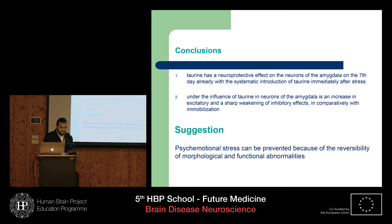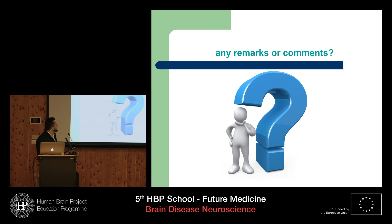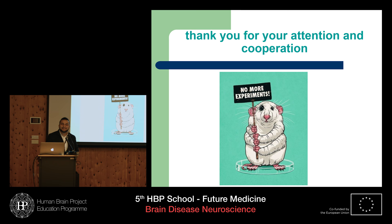Finally, as a conclusion, we can say that towering has a neuroprotective effect on the neurons of amygdala with the systematic introduction of towering immediately after stress. As a suggestion, we can say that psychoemotional stress can be prevented by towering. I should have used the towering before my speech! Any remarks or comments? Thank you very much for your attention and cooperation.